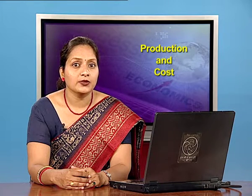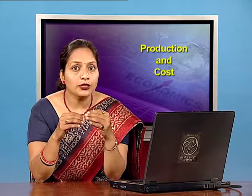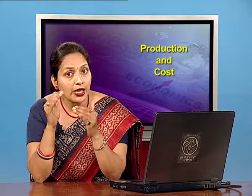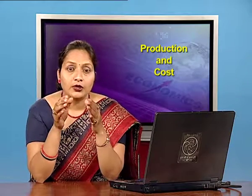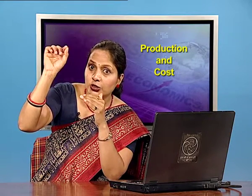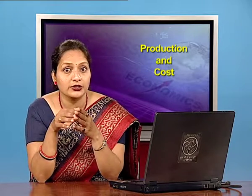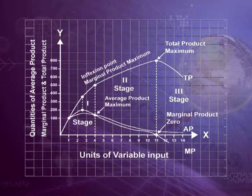Stage 1 is known as the law of increasing returns. In this stage, total product increases at an increasing rate, marginal product also rises and is maximum at point F, and average product goes on rising. From point F onwards, during stage 1, total product goes on rising but at a diminishing rate, marginal product falls but is positive. Stage 1 ends where the average product curve reaches its highest point. In the first stage, average product curve rises throughout, whereas the marginal product curve first rises and then starts falling after reaching its maximum.